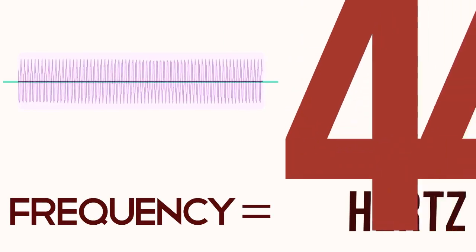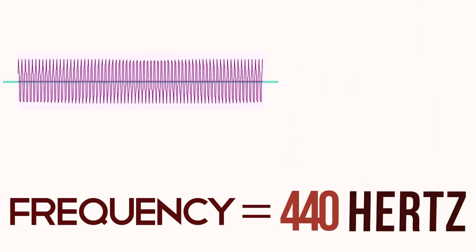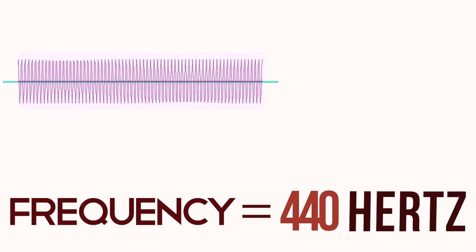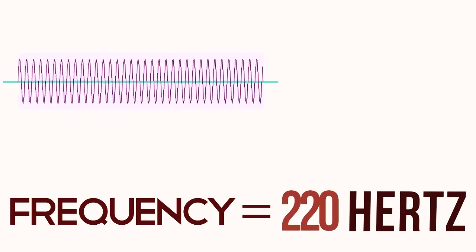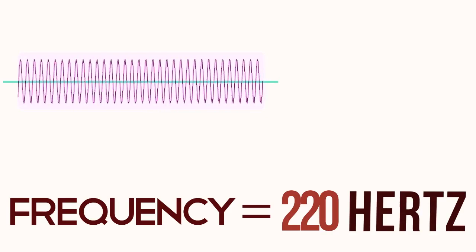Frequency is correlated to our perception of pitch. Waves in which many cycles occur per second have a higher frequency and are therefore perceived as being higher in pitch. Conversely, waves in which fewer cycles occur per second have a lower frequency and thus a perceived lower pitch.